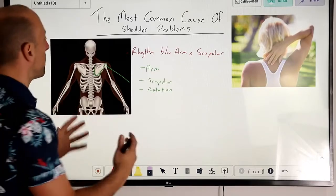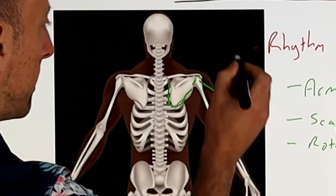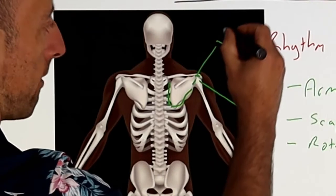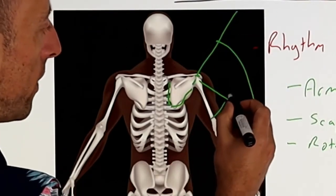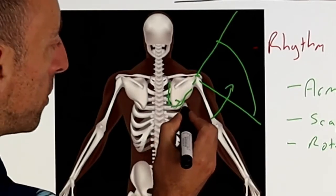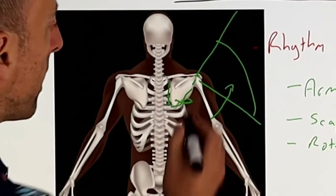Then a really cool thing happens. When we go from this area up to this area here, we now have part movement of the arm itself and we have part movement of the shoulder blade.